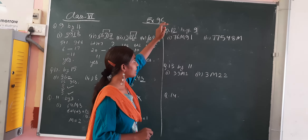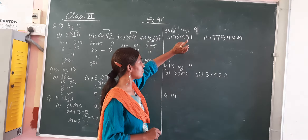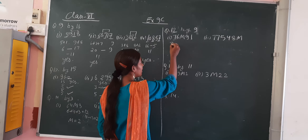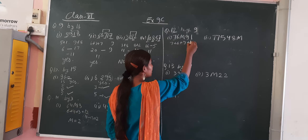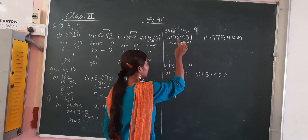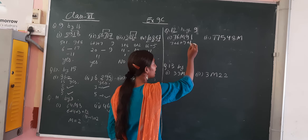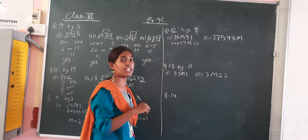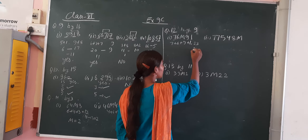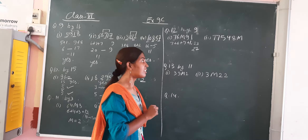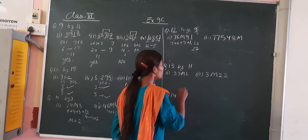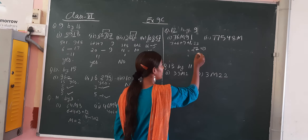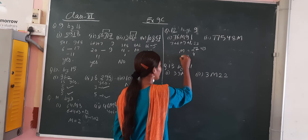This question asks to find the value of M so that the number becomes divisible by 9. Find the digit sum: 7 plus 6 plus 9 plus 1 is 23, and 23 plus 9 is also in range — wait, 7 plus 6 is 13, plus 9 is 22, plus 1 is 23. 23 is not divisible by 9. It should be 27, because 27 is in the 9 times table. So 27 minus 23 is 4 — the value of M is 4.